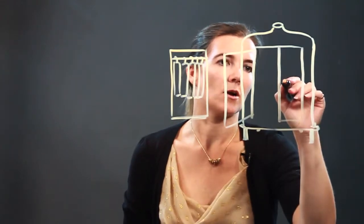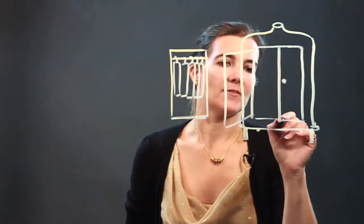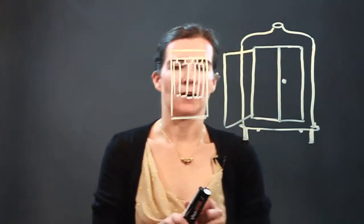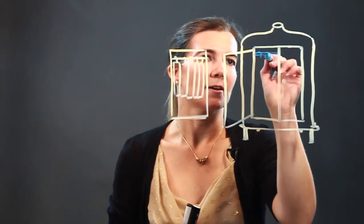So basically, an armoire has two doors, and inside of it, you might have some beautiful clothing. Again, you have the bar across, you have the hangers.